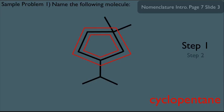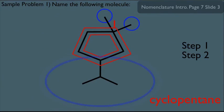For step two, we correctly number these carbons. We make this carbon one because it has two branch points. Because the next branch point is right here, we number in the clockwise direction to get low substituent numbers. So this is carbon two, three, four, and five. Notice if you numbered counterclockwise, the substituent on carbon three would actually be on carbon four instead — that's why we number clockwise.